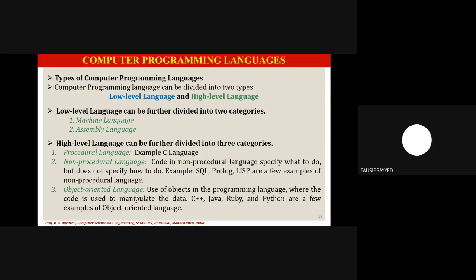High-level languages are designed in a very user-friendly manner using English language. Compared to low-level languages, high-level languages are much easier to understand and are more popular today. C can be termed as a structured and partially high-level language, while Java and Python are fully high-level programming languages.